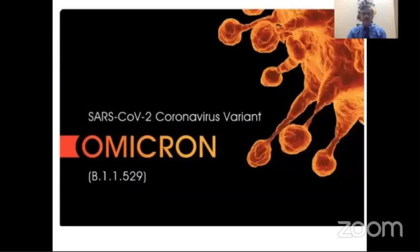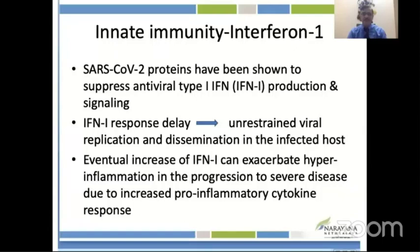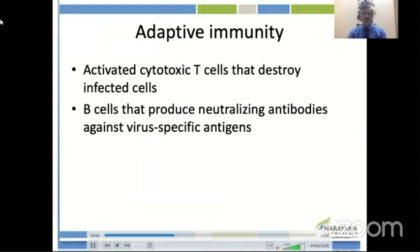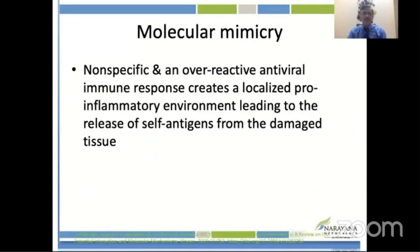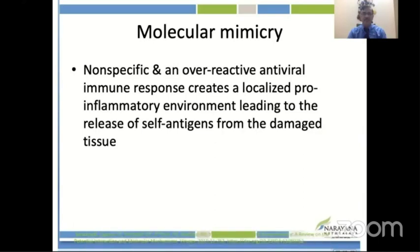This is particularly important with the newer Omicron strain, where the spike protein has had 30 mutations. The body responds through innate immunity by generating interferons or adaptive immunity by producing antibodies. There is also molecular mimicry where an anti-viral immune response creates a pro-inflammatory environment, releasing self-antigens from damaged tissue, which can cause vascular occlusion.